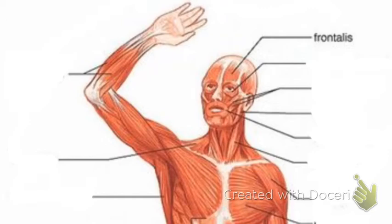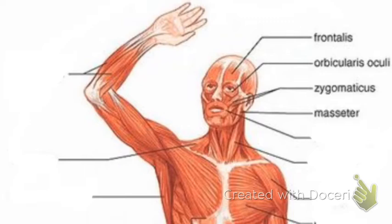Frontalis is what allows you to lift your eyebrows and furrow your forehead. Orbicularis oculi is the circular muscle that goes around your eye; it's what allows you to blink and shut your eye really strongly. Zygomaticus helps with chewing. Masseter also helps with chewing. Orbicularis oris is basically the muscle underneath your lips, so it's what allows you to manipulate your mouth and open and close in certain ways.